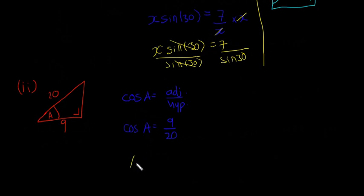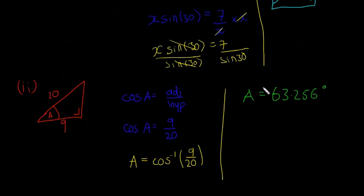There's a trick if you want to find the angle. If you have cos A equals 9 over 20 and you're looking for an angle, then you can say A equals cos inverse, or cos minus 1, of 9 over 20. That's a button on your calculator - press shift or second function then cos. Stick that in and A equals 63.256 degrees.